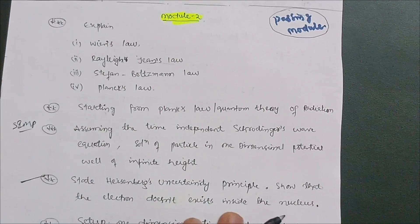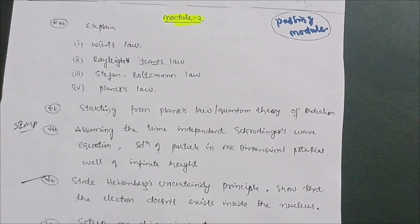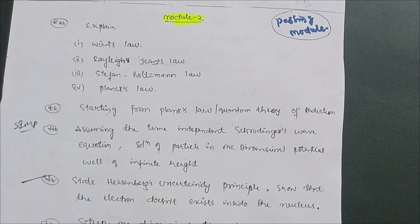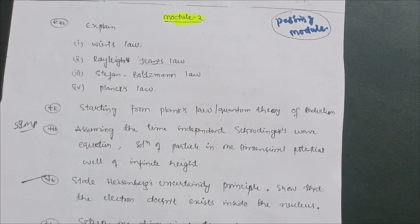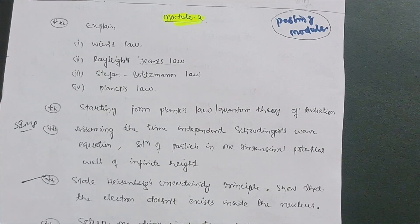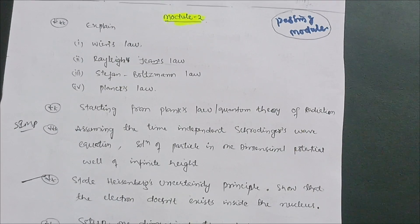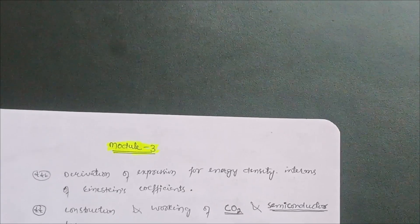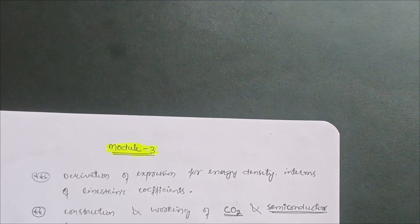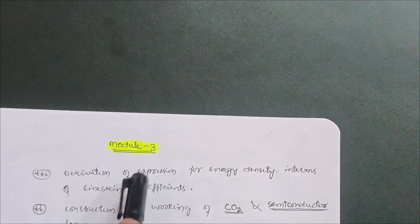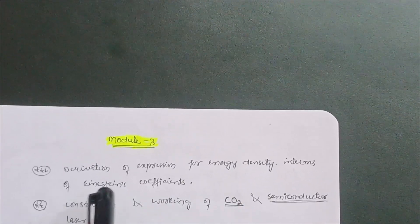It is not possible to pass this subject by covering only three modules, since numericals and theory questions may be intermixed. You should be thorough with the three modules discussed, but you also need to pick at least two or three questions from the remaining two modules. Let me now discuss Module 3. An important derivation here is the expression for energy density in terms of Einstein's coefficients — a simple derivation you can easily go through.